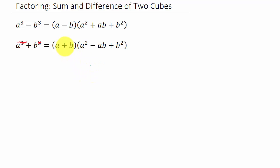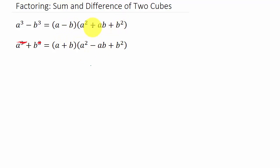This middle sign is opposite from the first sign, and the last sign is always positive. It's the same on the difference formula too — drop the exponents to get a minus b, then square it, multiply them to get ab, and square the last one. This sign is opposite of the first, and the last is always positive.